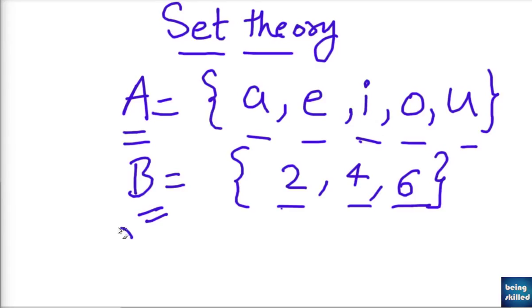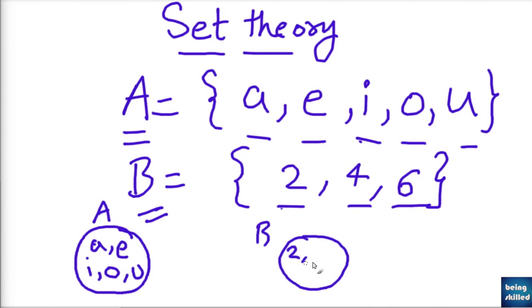So 2, 4, 6 are the even numbers, so B is the set of these even numbers. We can also draw a circle which will represent this. So we will have, let's say, this denotes A. So we are having a, e, i, o, u, and then we are having another circle which contains 2, 4, 6 elements.